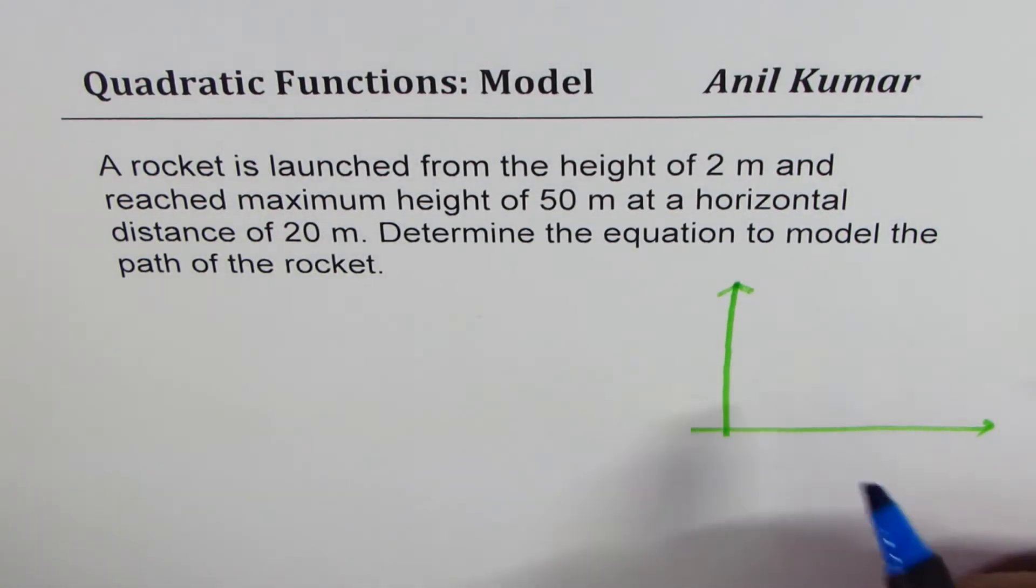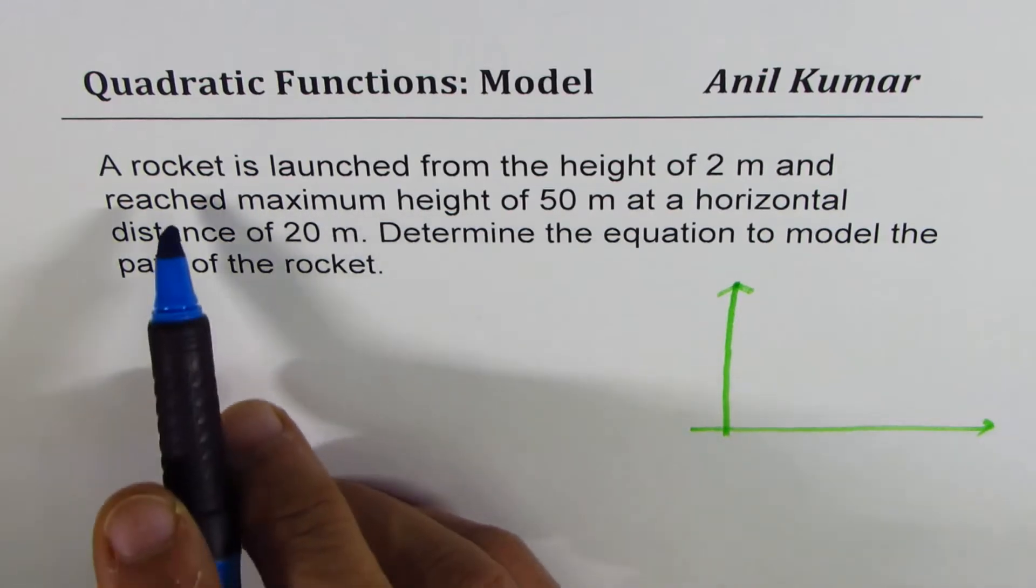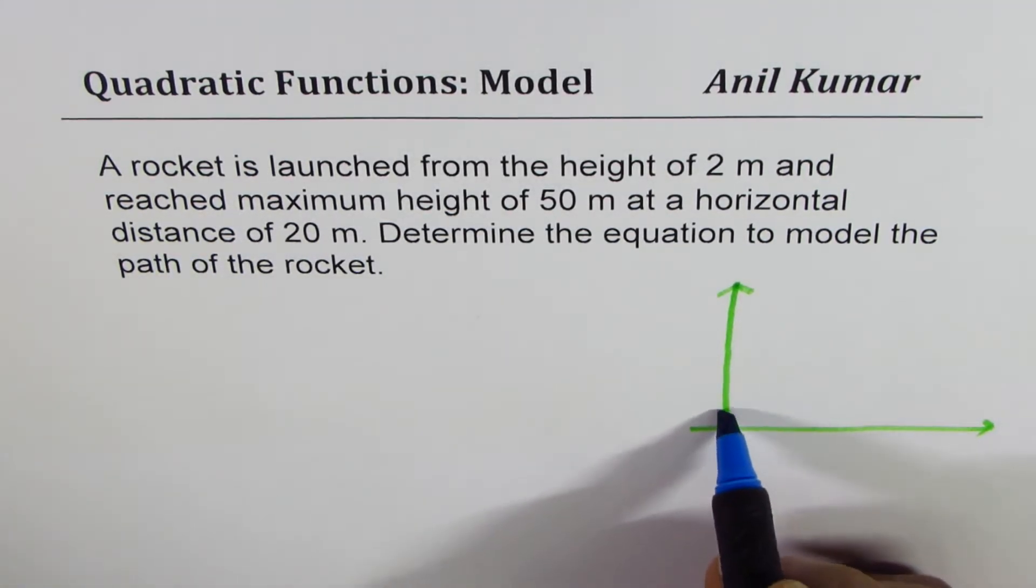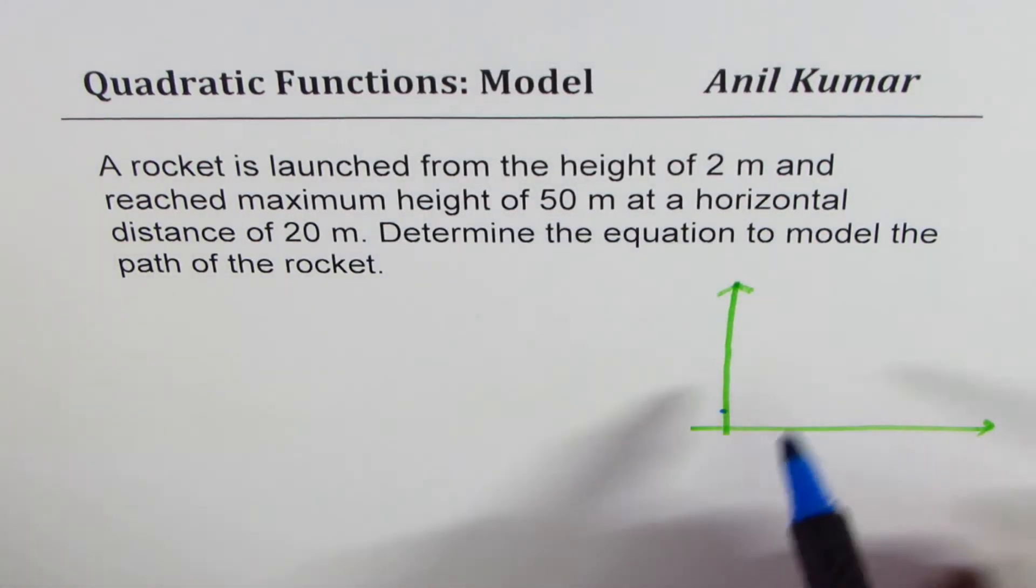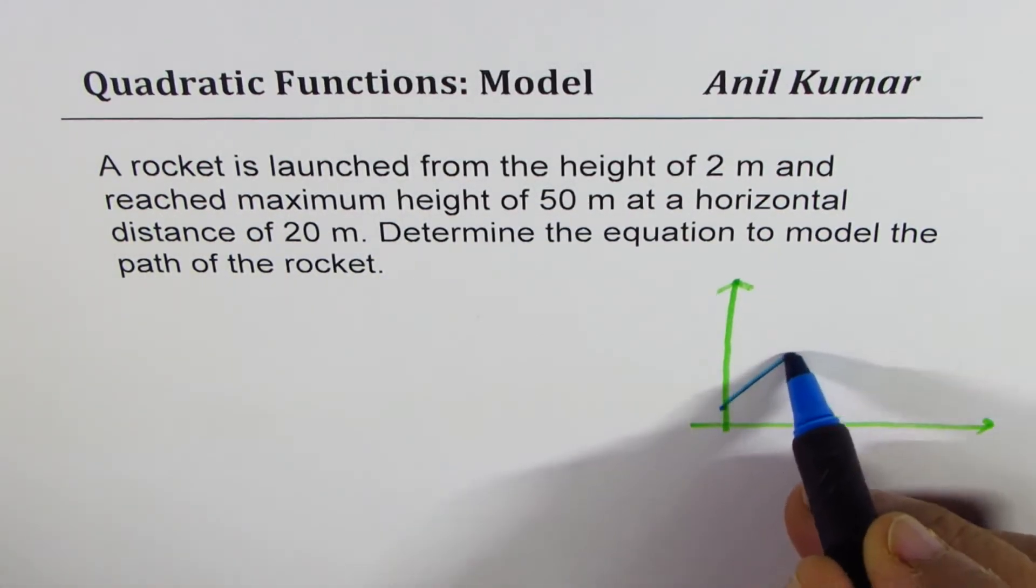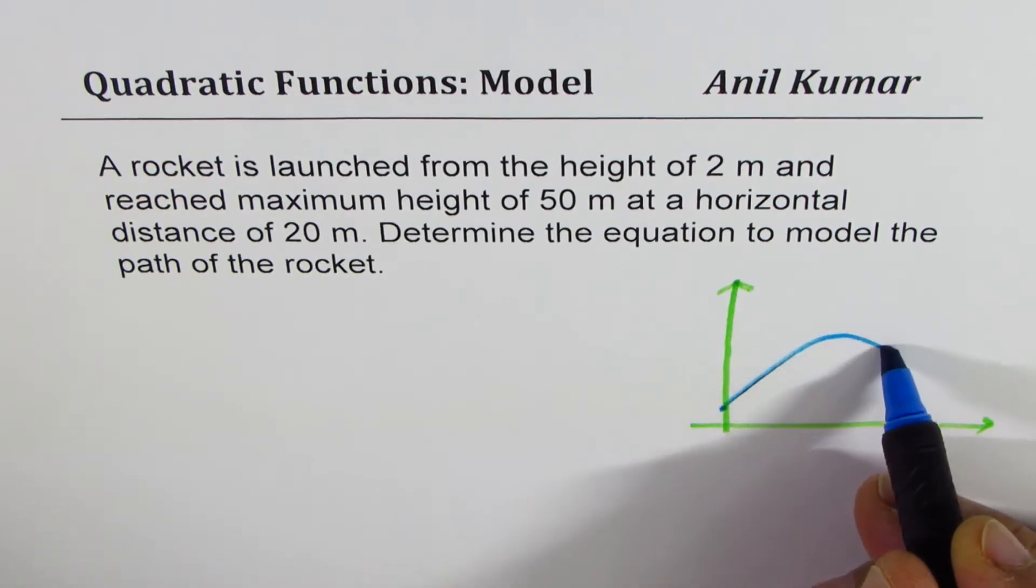So let me first sketch what we are talking about. Let's say a rocket is launched from the height of 2 meters, that is the height from where the rocket is launched. It reaches a maximum height of 50 meters. So it reaches the maximum height and then falls down.